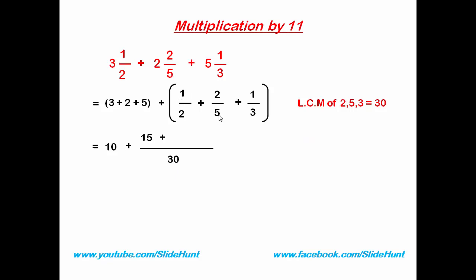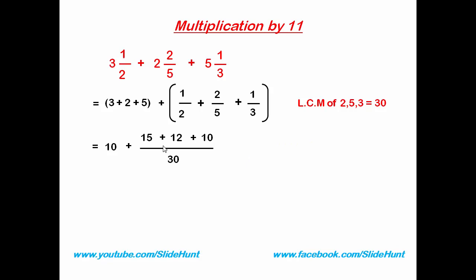Plus 30 by 5 is 6, and 6 times 2 is 12. Plus 30 by 3 is 10, and 10 times 1 is 10. Now add the numerators: 15 plus 12 is 27, and 27 plus 10 is 37. So we get 37 by 30.